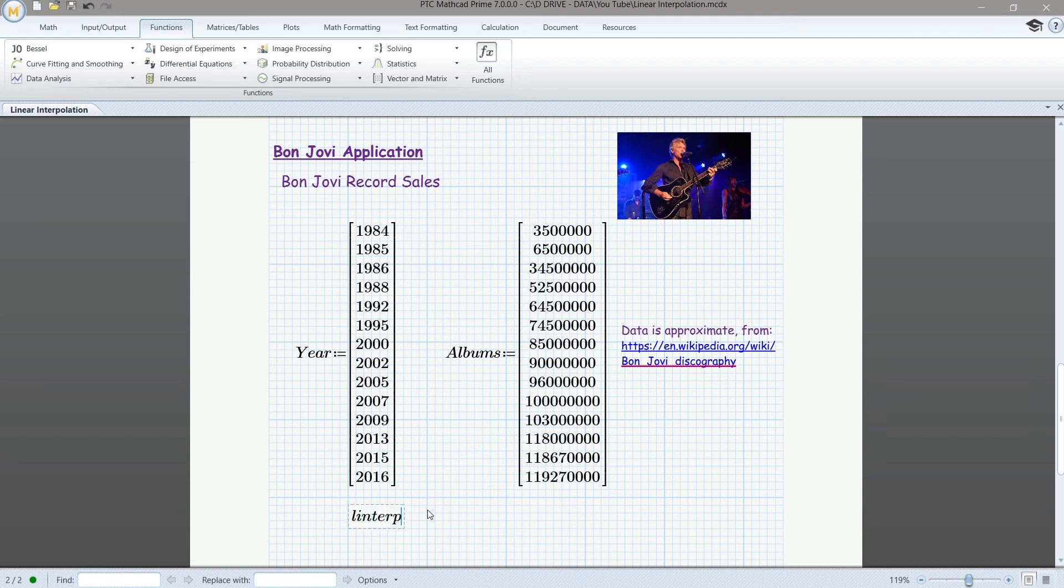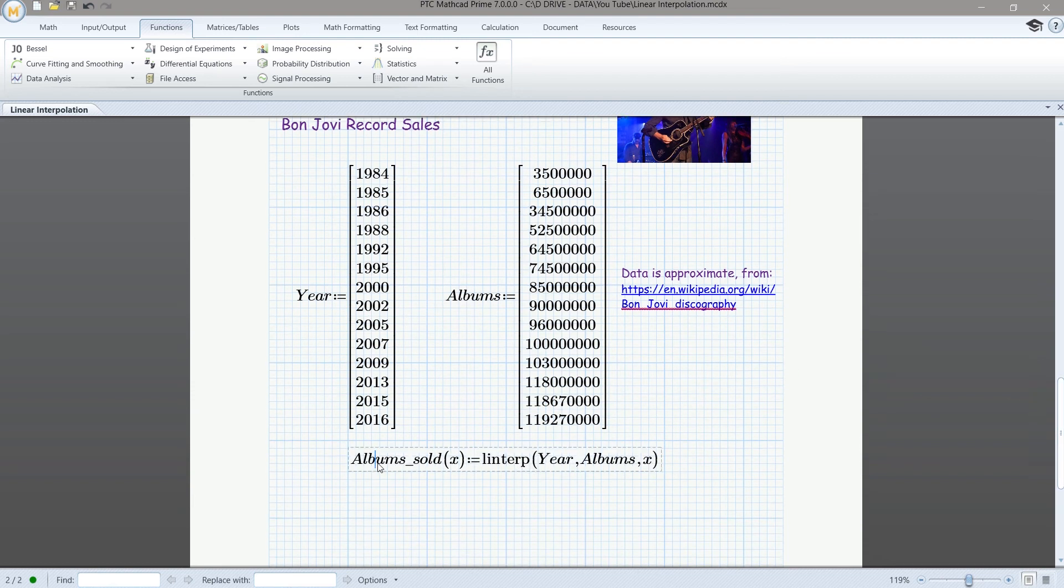So now we know how to do this. So linterp, our input for X is going to be the year. Our input for Y is going to be the number of albums. And then we have an independent variable X. We're going to assign it to a function. So we can say albums sold, and that's going to be a function of the independent variable X that represents the year at which we want to do the interpolation.